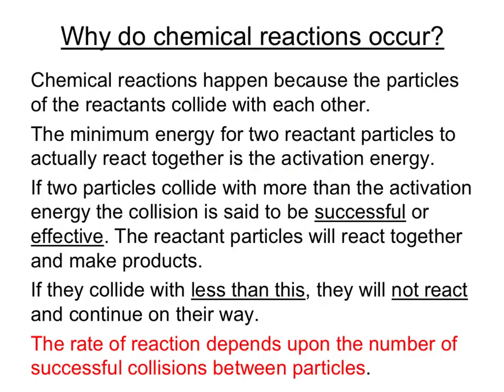To understand the effect of temperature on the rate of reaction we have to use something called the reacting particle model, or sometimes called the collision theory, to explain what's happening in a chemical reaction. Scientists believe that chemical reactions occur because of collisions between particles of the reactants. If these collisions have got enough energy then they have sufficient energy to react, but glancing blows might not lead to a reaction — so these collisions have to be successful.